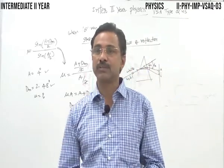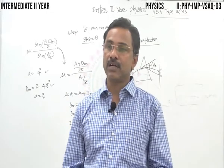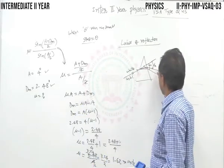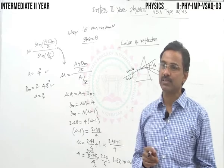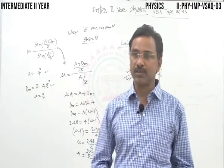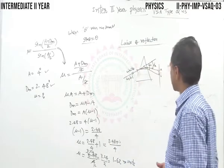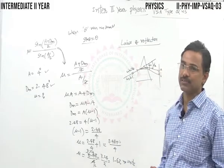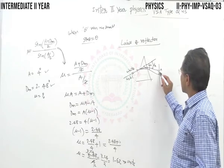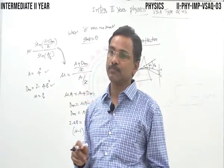The process of splitting white light into its constituent colors is called dispersion. The array of colors observed on a screen is called the spectrum — it can be a pure or impure spectrum. A rainbow is an example of an impure spectrum, a natural phenomenon observed during the rainy season where colors overlap. Violet gets more deviated compared to other colors.